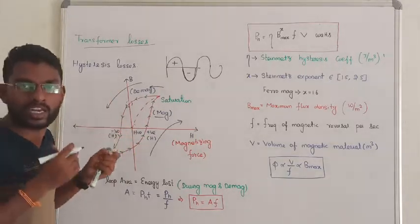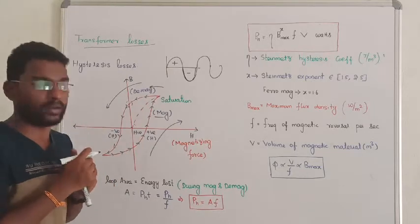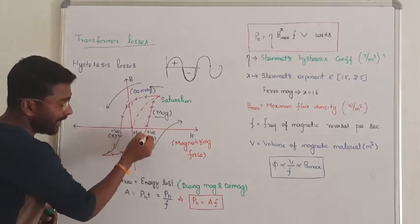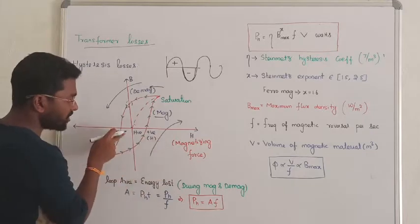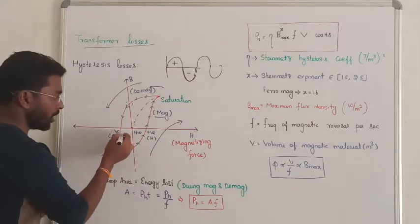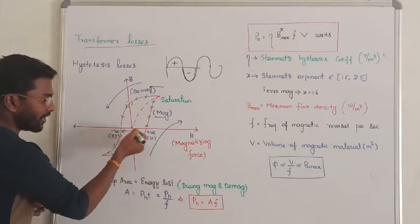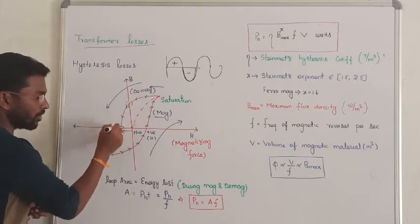The transformer continues to accept changes. When magnetic force is zero, the flux density is not zero. So how to increase it? Through the negative cycle. This value increases.